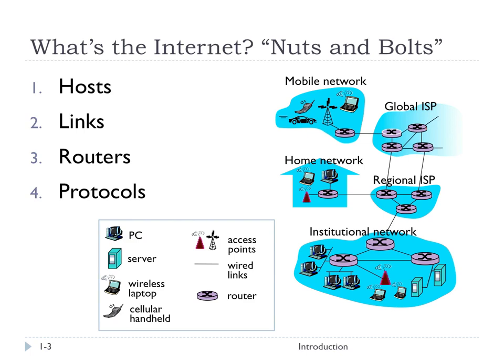Thirdly, routers. We can see routers as a type of host, but they're a special kind of host with the job of making paths for the data. Routers exist in the core of the network and provide routing, or path selection, for data as it goes through a complex network. The last piece, which is not hardware but is more software-based, is protocols — rules implemented by the host that allow all these pieces to interconnect in a useful, efficient way.